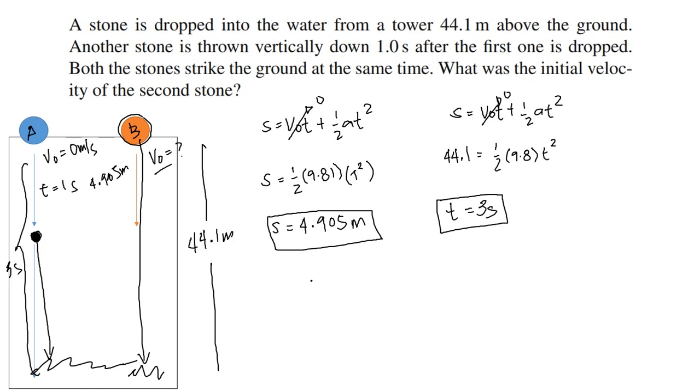Okay, gamitin lang din natin yung equation na yun. Meron tayong s is equal to v₀t plus one-half at squared. Yung height 44.1, initial velocity which is hindi natin alam, tapos yung time meron tayong three seconds minus one, two seconds na lang yung time na meron sya, plus one-half.